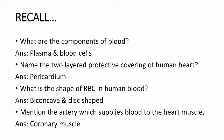Third one: What is the shape of RBC in human blood? The shape of RBC in human blood is biconcave and disc-shaped. Mention the artery which supplies blood to the heart muscle. The coronary artery supplies blood to the heart muscle.